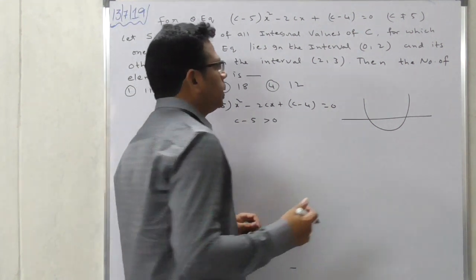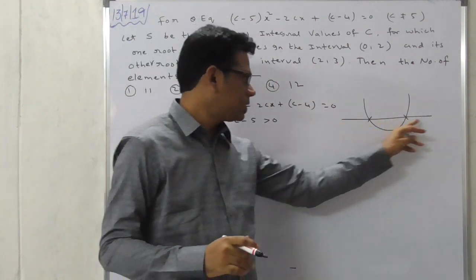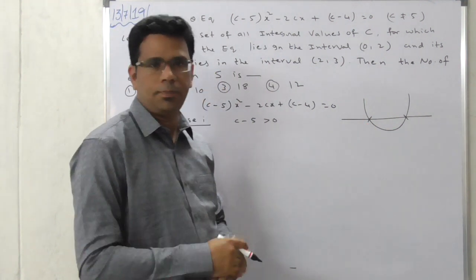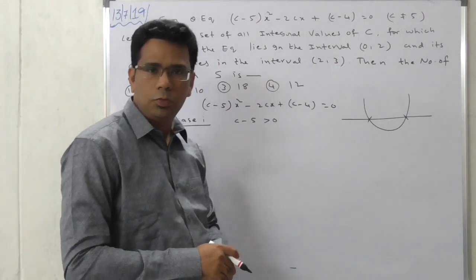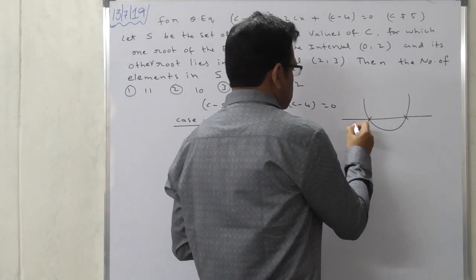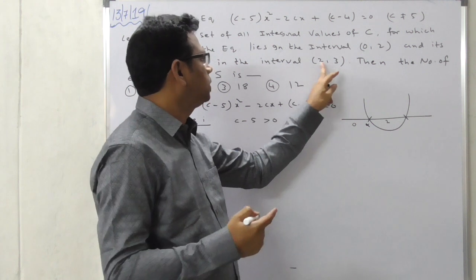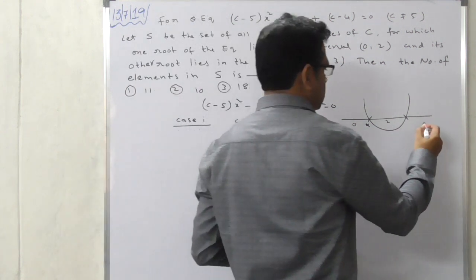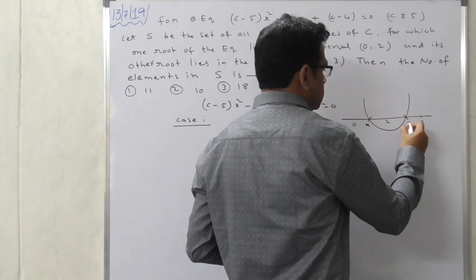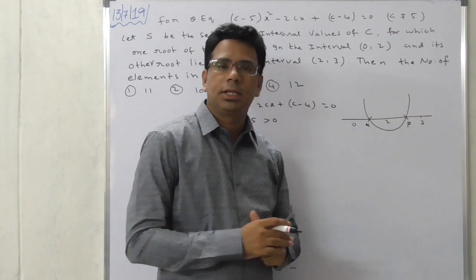Now come to the given conditions. One root lies in the interval (0, 2) and the other root lies in the interval (2, 3). This covers the location-of-roots concept — a very good question from JEE 2019. The curve intersects the x-axis at two points, which are our roots. Let alpha lie in (0, 2) and beta lie in (2, 3).